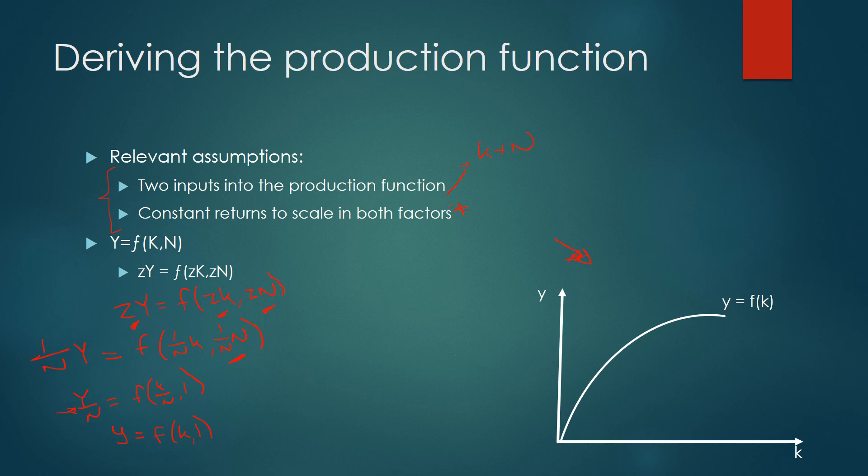Hence, therefore, the production function takes this upward sloping curve as given.